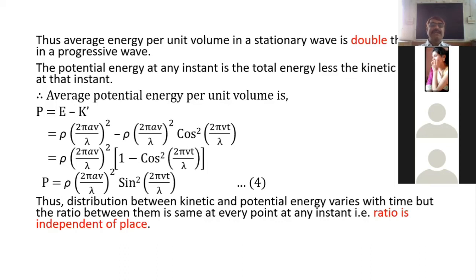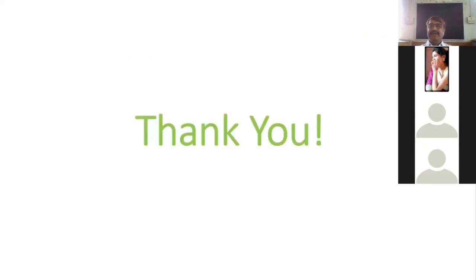For potential energy, at any instant it equals total energy minus kinetic energy. The average potential energy per unit volume is obtained by subtracting average kinetic energy from total energy. From equations 3 and 4 we conclude that kinetic and potential energies both vary with time, their ratio changes from instant to instant, but this ratio is independent of position.